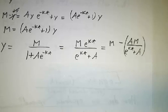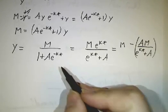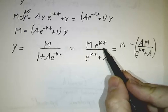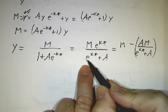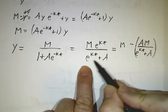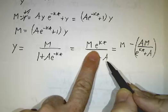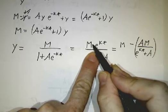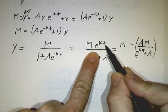The important thing about this behavior is to understand what happens early in the game and late in the game. Early in the game, e to the kt is much less than A. Say, t is a very large negative number. A long time ago, e to the kt is a tiny number. And so this is approximately M e to the kt over A, which is a constant e to the kt. At the beginning of the epidemic, everything is growing exponentially.